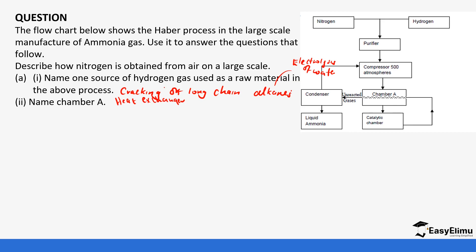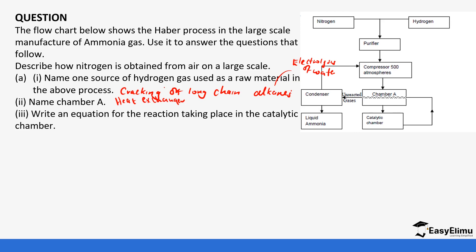Write an equation for the reaction taking place in the catalytic chamber. Nitrogen reacts with hydrogen to form ammonia. Let's balance this equation: N2 + 3H2 → 2NH3.